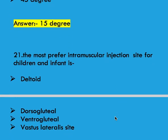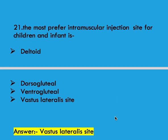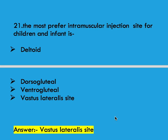Next question: the most preferred intramuscular injection site for children and infants is options: deltoid, dorsogluteal, ventrogluteal, and vastus lateralis. Right answer is vastus lateralis site.